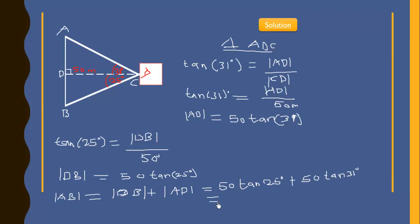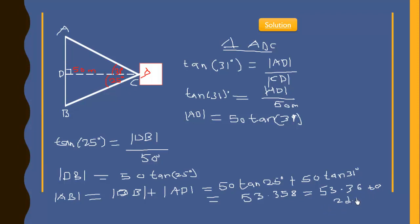Evaluating this gives us approximately 53.358 meters. Corrected to two decimal places, AB equals 53.36 meters. That is the height of the tower.